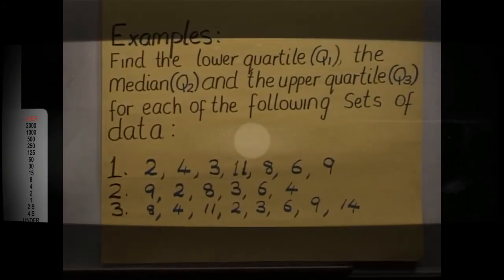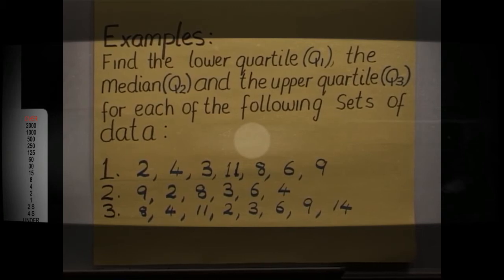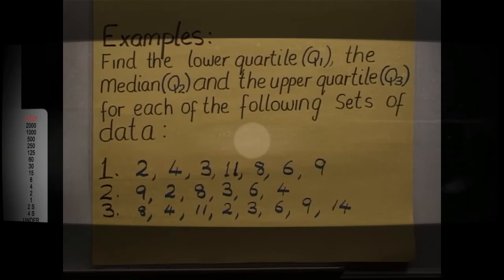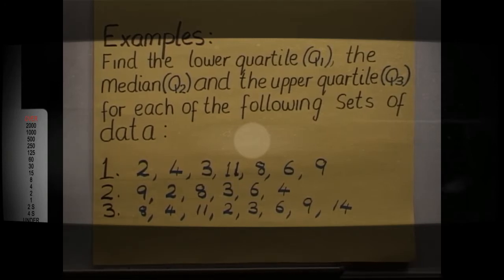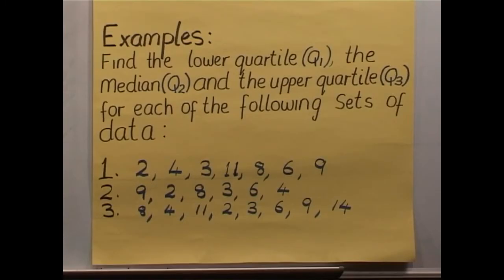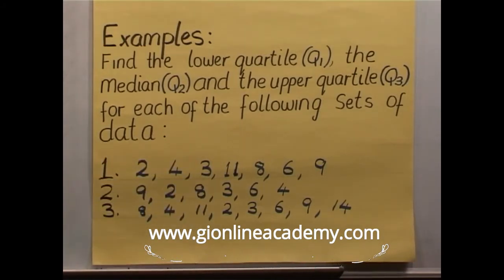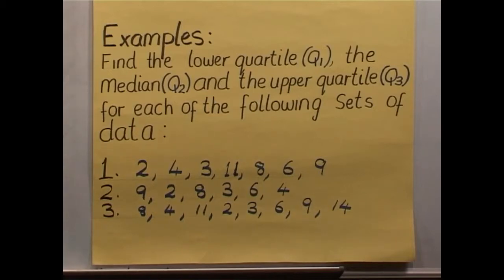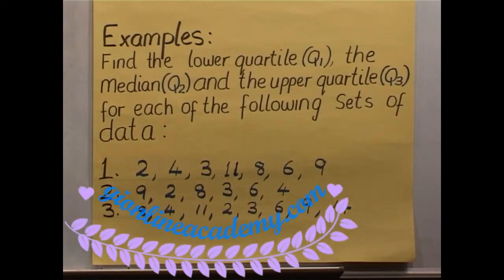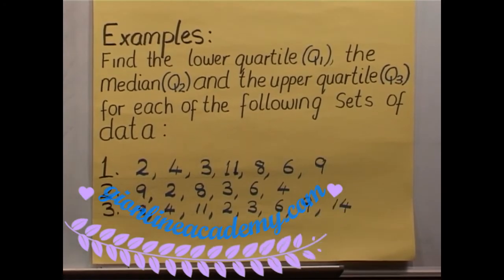In the second set of numbers, we have 6 values. Let's see how we can find the median, the lower quartile, and the upper quartile. As usual, the first thing to do is to arrange the figures in order. Looking at our values, the lowest is 2, followed by 3, then 4, then 6, then 8, and 9. The question: find the median, the lower quartile, and the upper quartile.